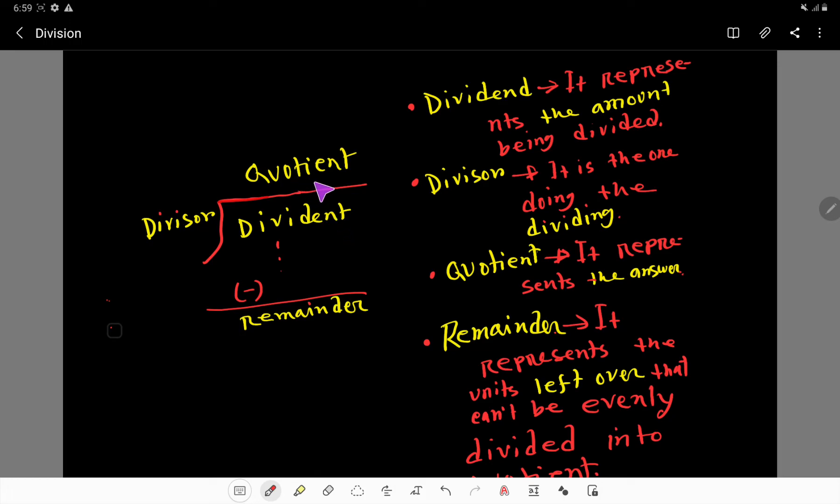So look, divisor divides dividend and we get quotient, and sometimes we get remainder. What do you mean by dividend? Dividend represents the amount being divided. Divisor is the one doing the dividing. Quotient represents the answer, the number of groups. And remainder represents the units left over that cannot be evenly divided.